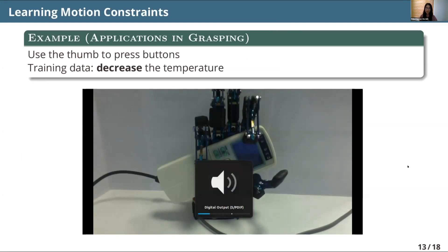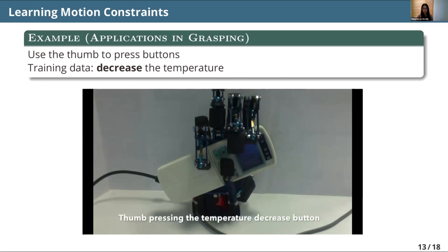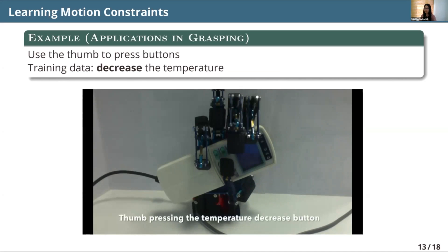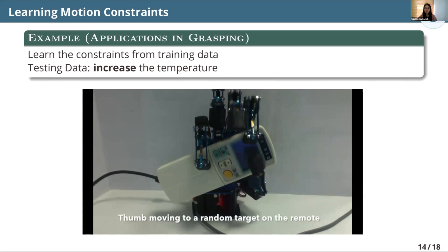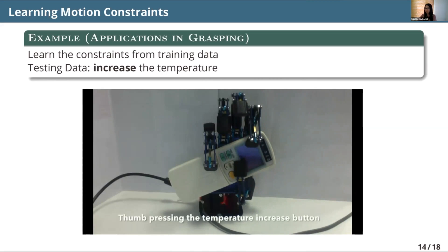Here's one example we tried. We want to teach a robot how to use the remote control of an air conditioner. Typically, a human uses their thumb to press a button while fingers hold the remote control itself — and this is the kind of constraint we teach the robot. In the training phase, we collect data of the robot repeatedly pressing the button to decrease the temperature, and learn the projection matrix using the objective function. In the testing phase, we want to do something slightly different: use the thumb to increase the temperature instead. We take the previously learned projection matrix with the new task, and it reproduces the motion accordingly.